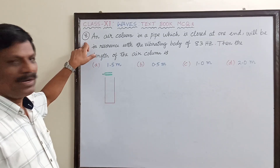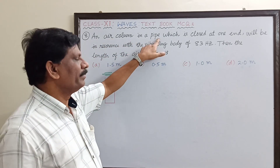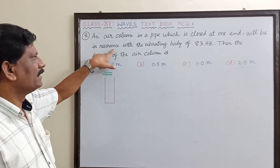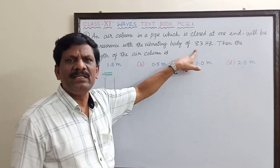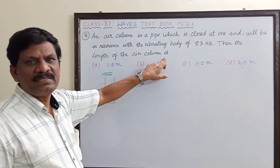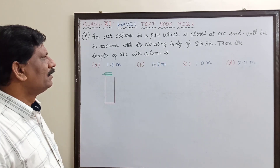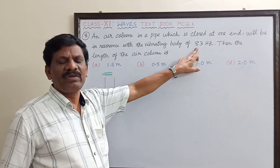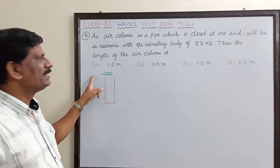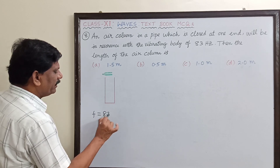Problem number eight: an air column in a pipe which is closed at one end will be in resonance with a vibrating body of frequency 83 Hertz. The length of the air column is to be determined. Let us take the vibrating body as a tuning fork with frequency f equal to 83 Hertz.